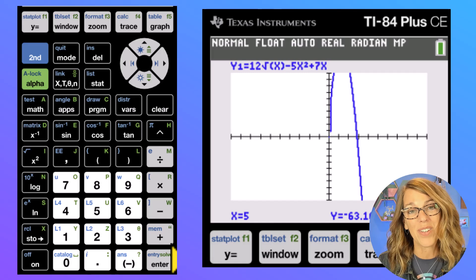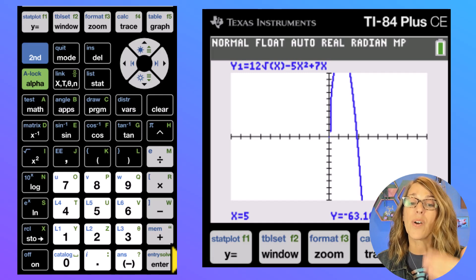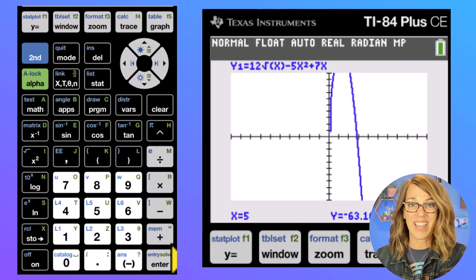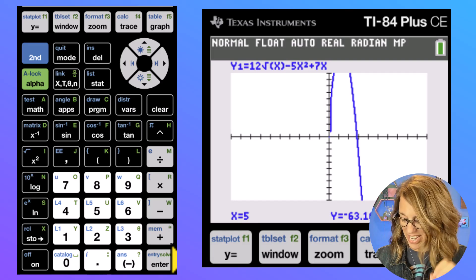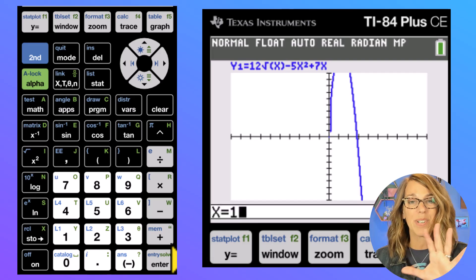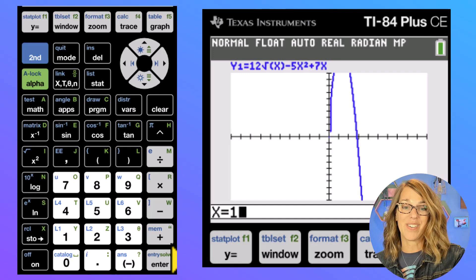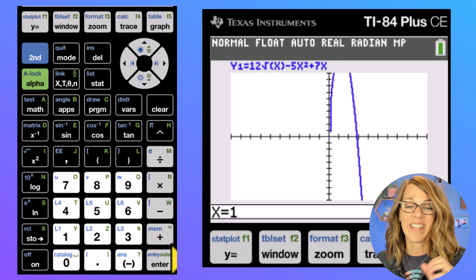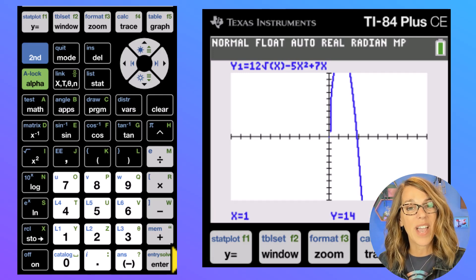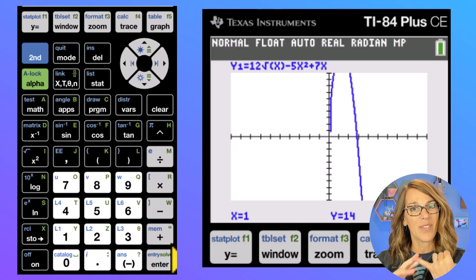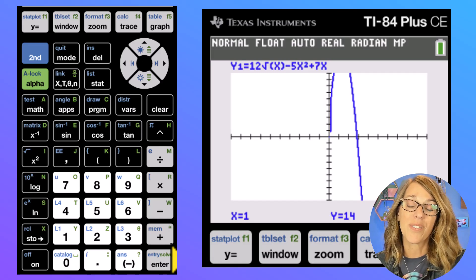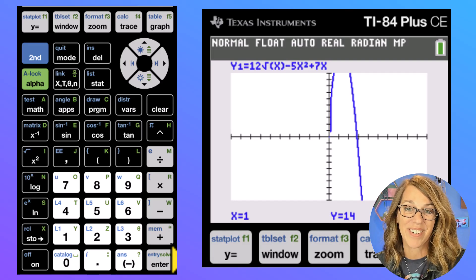Next, let's find the value when x is equal to one. I could go back to calc and do this again. But I really just want to plug in the number one, it remembers that I'm in value. And it says, oh, you want x equals one? Yes, please. And the value at one is 14. Not only is this a great time saver, but it's also a great mistake saver.